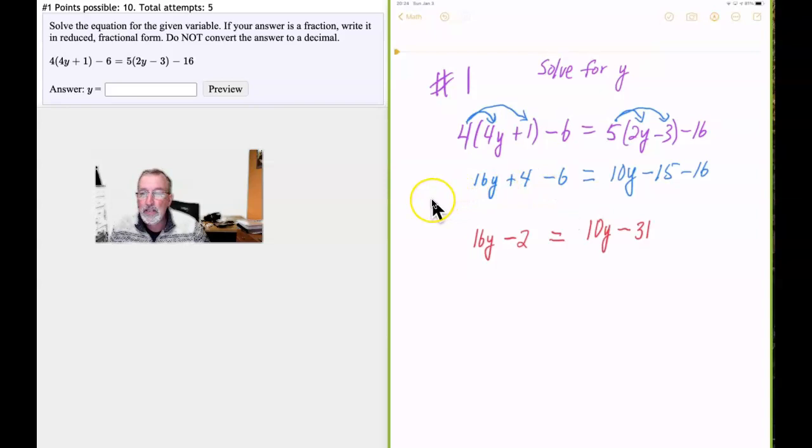So now we've simplified it this far. And the next step will be to get all of our y's on the same side and then isolate y and find out what the value is. It doesn't really matter which way you go with this. We're going to end up with a negative at some point because if we move the 31 to the left side, we'll end up with a positive 29. But then we have to move the 16y to the right side, which will give us a negative 6y. So why don't we think about keeping our y value positive. We will subtract 10y from both sides.